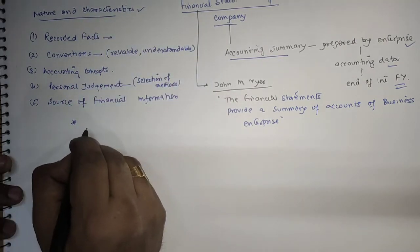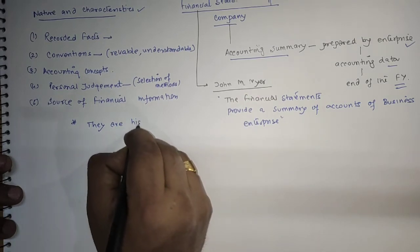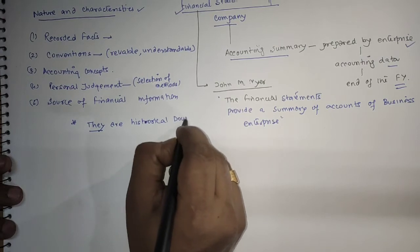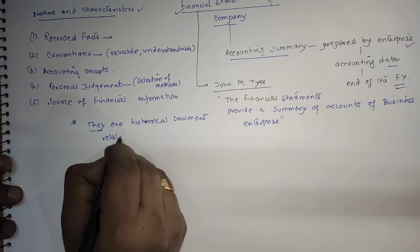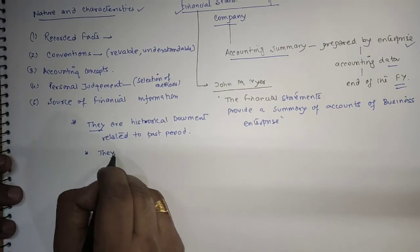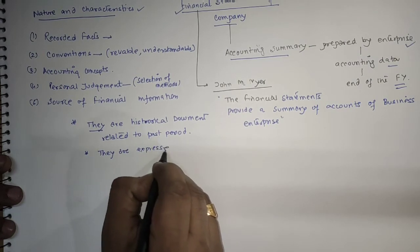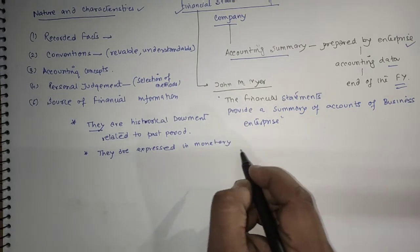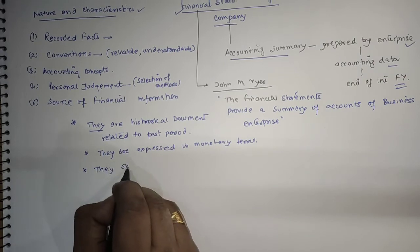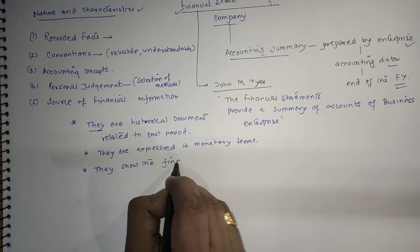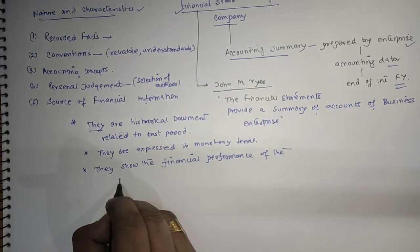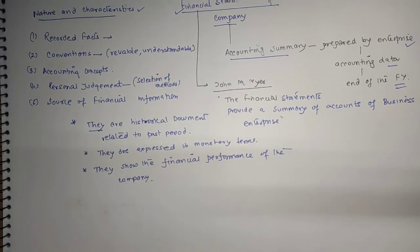In nature and characteristics, some more points are there. Financial statements are historical documents related to the past period. Secondly, they are expressed in monetary terms. Third, and most importantly, they show the financial performance of the company.